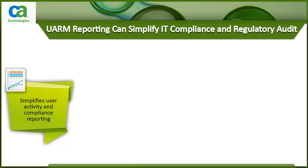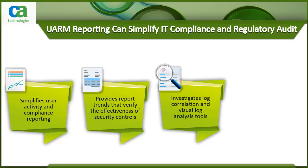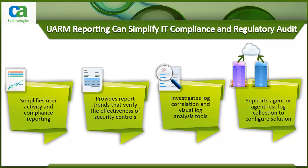These reports provide report trends that can verify the effectiveness of security controls and expose control weaknesses that need to be proactively managed and controlled. Policy violations can be further investigated using log correlation and visual log analysis tools with granular drill-down capabilities. CA UARM supports agent or agentless log collection, giving organizations the ability to configure the solution to meet their specific needs.